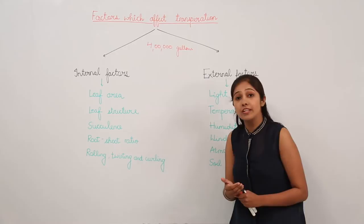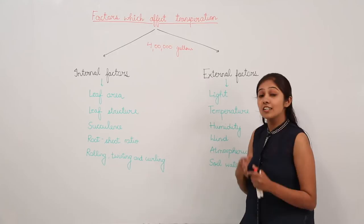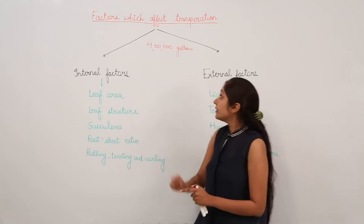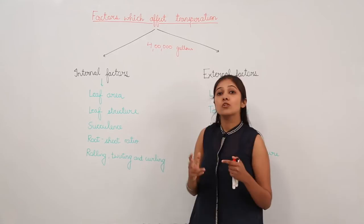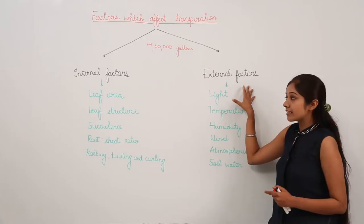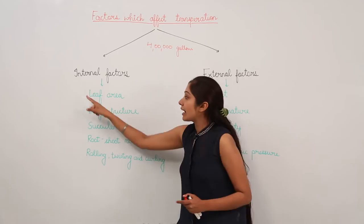These are the factors which we will be discussing, which have a direct influence on the rate of transpiration. A corn plant planted in one acre of land can transpire four lakh gallons of water in one growing season — you can imagine the rate of transpiration in this case. There are two categories: internal factors and external factors. We will be discussing internal factors first.